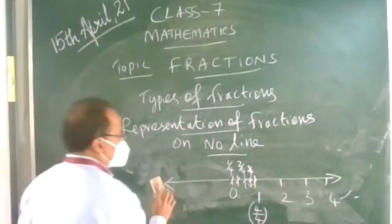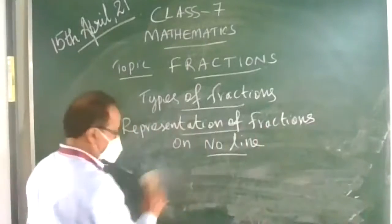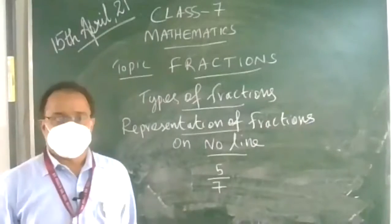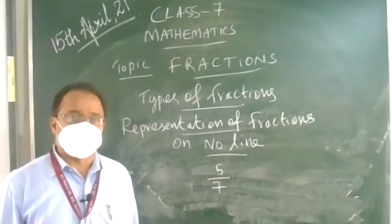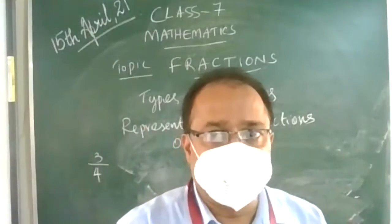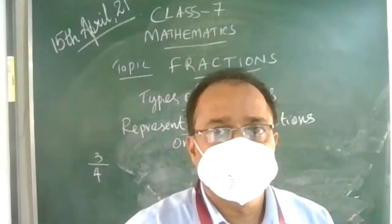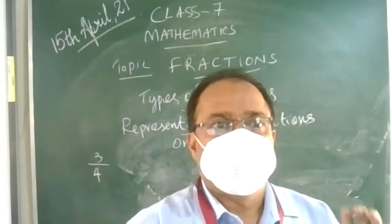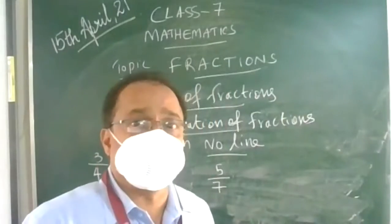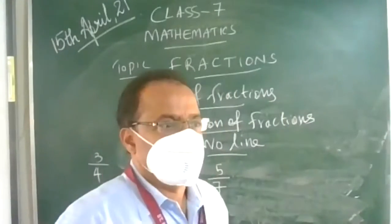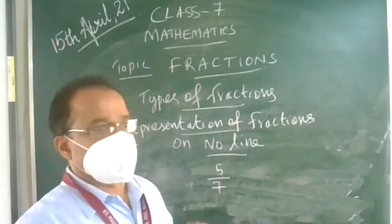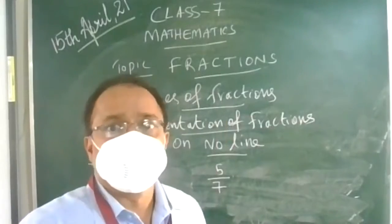I will take another example: represent 5 upon 7 on the number line. All of you write this question. Write the heading — Revision: Fractions — and write the question: Represent 5 upon 7 on the number line.